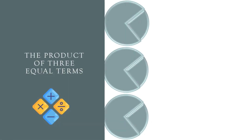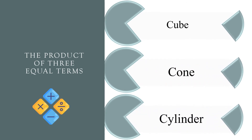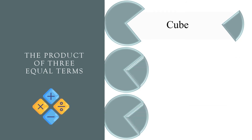The product of three equal terms. Cube, cone, or cylinder? The correct answer is cube.